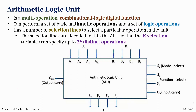Today I'm going to discuss the Arithmetic Logic Unit, or ALU. It is a multi-operational combinational logic circuit that can perform a number of basic arithmetic as well as logical operations. In order to select between different arithmetic or logical operations, it has a number of selection lines. If it has k selection lines, it can make up to 2^k different selections and accordingly 2^k different operations.